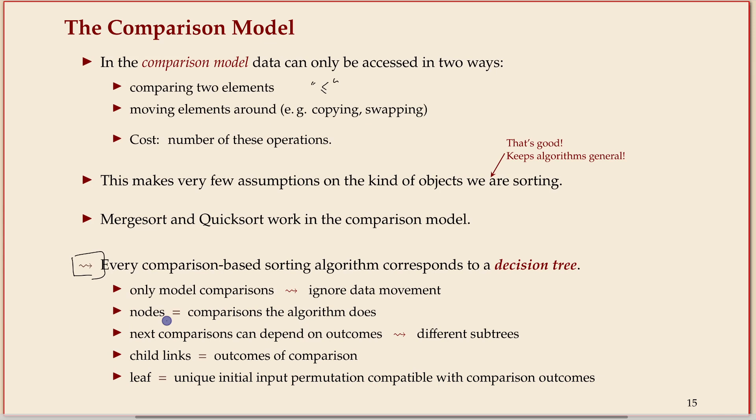So in that sense, we can model computation by having comparison nodes where there's two possible outcomes. And then the algorithm branches in two possibilities. It either follows the left or right path. We ignore any movement of data in between. So instead we'll only look at the comparisons. And what next comparison is done can of course depend on what you've done before. So you have two different subtrees. But that's pretty much all. Let me show you an example. I think that's clearer.